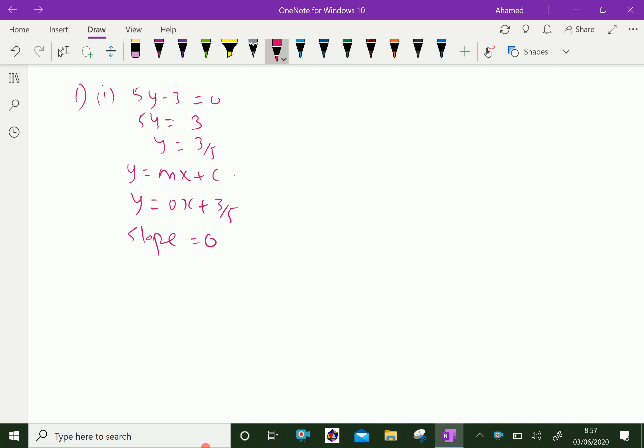The second one. The equation is 7x - 3/7 = 0. We can write this as 7x + 0y - 3/7 = 0.